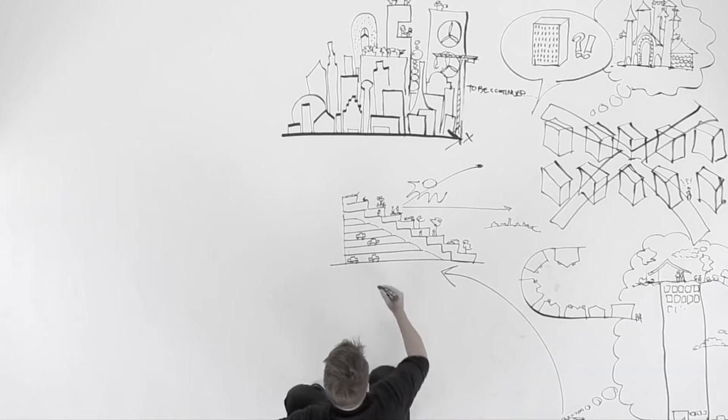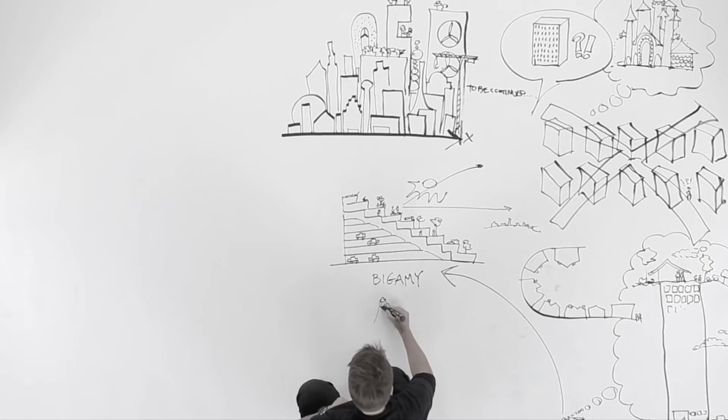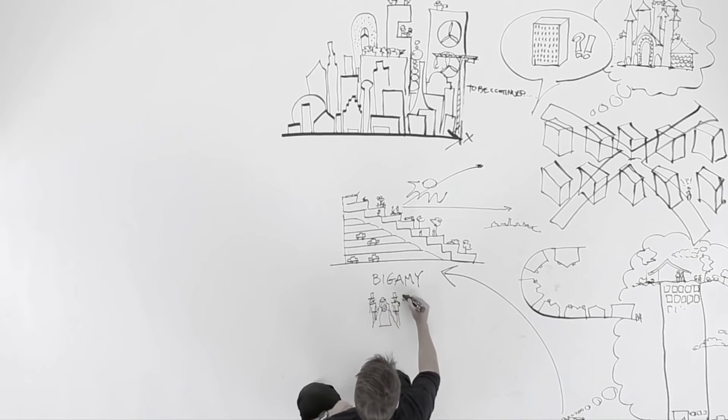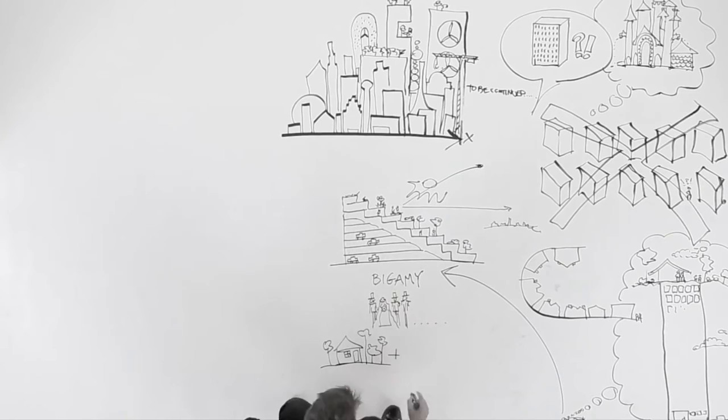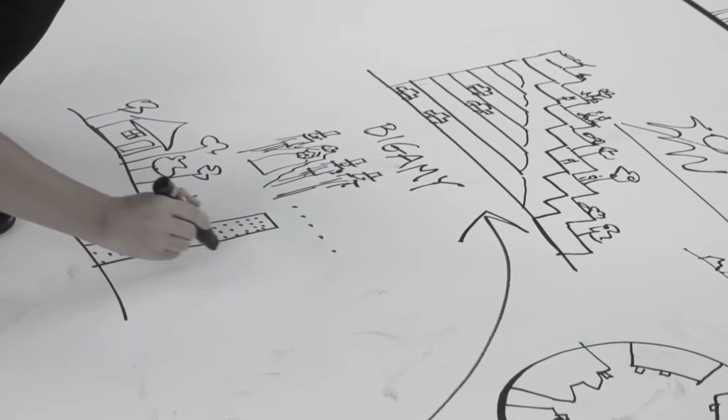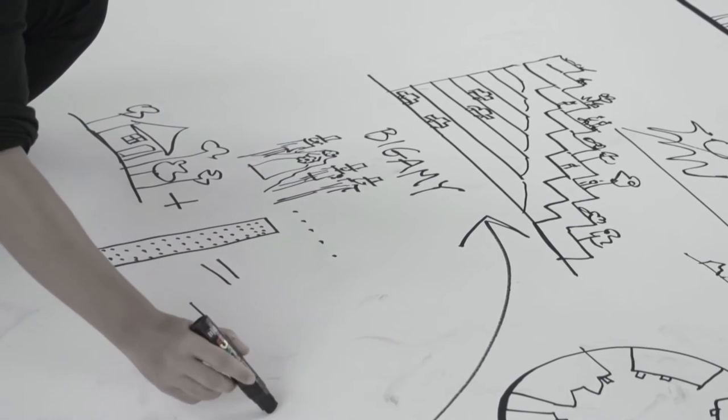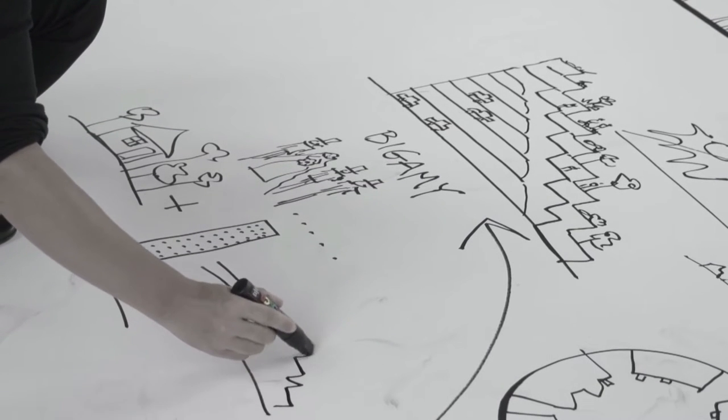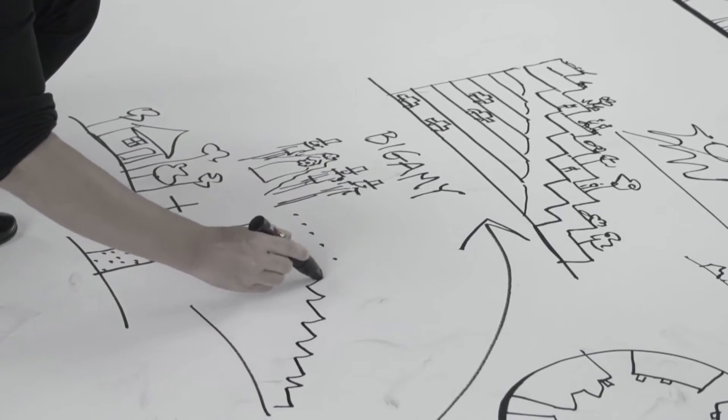We call this idea bigamy, that you can take multiple desirable elements that might not fit together or even seem mutually exclusive, like the garden home in the high-rise, and merge them together into a new genre. You don't have to remain faithful to a single idea, you can literally marry multiple ideas into promiscuous hybrids.